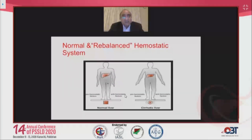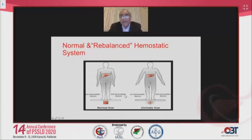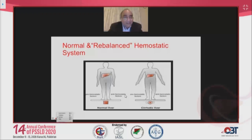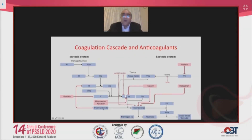In a normal liver, pro- and anti-hemostatic factors maintain a stable balance. In cirrhosis, although the hemostatic mechanism is rebalanced, it sits on a slippery slope and can swing toward either bleeding or thrombosis. This rebalanced state challenges the reliability of traditional coagulation tests for assessing hemorrhagic risk in cirrhosis and the use of pro-coagulant agents or plasma to correct coagulopathy.